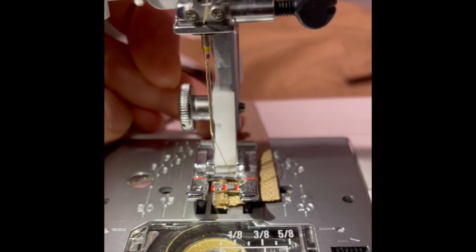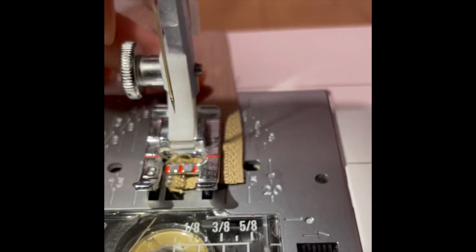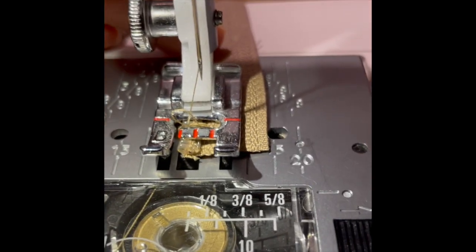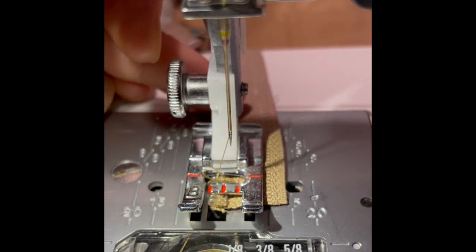Now we simply sew back and forth several times across, making a place that the zipper pull cannot go past. Repeat this step for the other side.